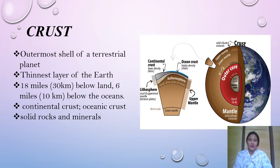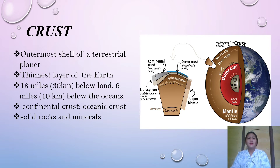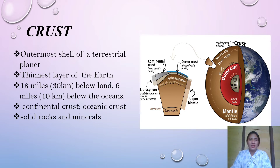Let's start with the crust — the first layer of the Earth, which is also the outermost shell of a terrestrial planet. The crust is the thinnest layer of the Earth. It has an average thickness of 18 miles or 30 kilometers below land, and 6 miles or 10 kilometers below the oceans. The crust is separated into two: the continental crust, which forms one-third of the Earth's surface — the land or the continents — and the oceanic crust, which makes up the remaining area. The crust is made up of solid rocks and minerals.